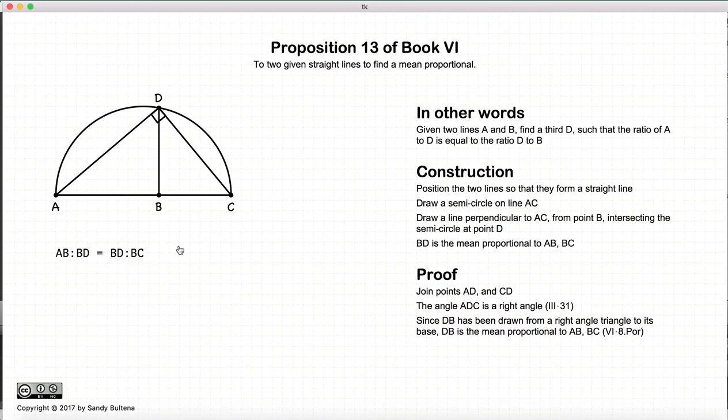This is how you construct a line, BD, that's the mean proportional to two lines AB and BC.